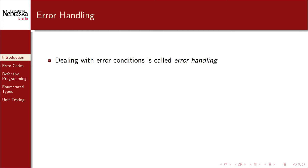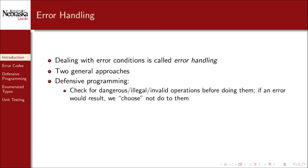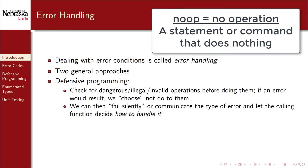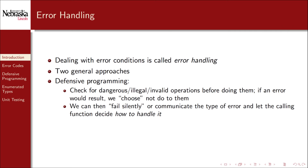Dealing with error conditions is known as error handling. There are two general approaches. The first is defensive programming, in which you write code to check whether or not your program is about to perform a dangerous, illegal, or invalid operation. Then, before performing this operation, if an error would occur, we choose not to perform it. We can then choose to either fail silently via a no-op, or communicate the type of error and allow the calling function to decide how to handle it. I like to call this approach "looking before you leap" — you check to see if you're about to fall and fail, and if so, decide not to leap.